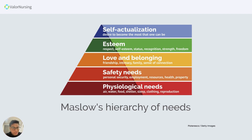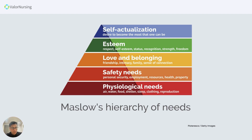According to Abraham Maslow, the first and most basic need of a person is your physiological needs, which are composed of air, water, food, shelter, sleep, clothing, reproduction, and freedom from pain. These are sometimes called anatomical or basic needs — your physiological needs: air, water, food, shelter, sleep, clothing, and reproduction. These are the most important part of the hierarchy.